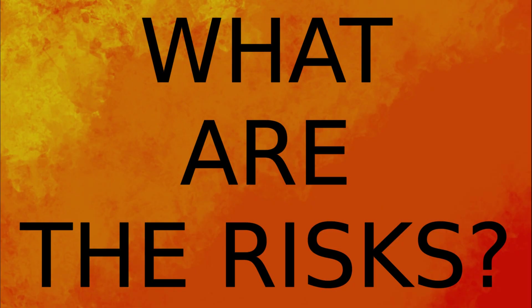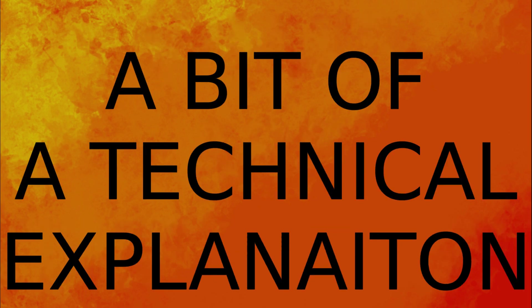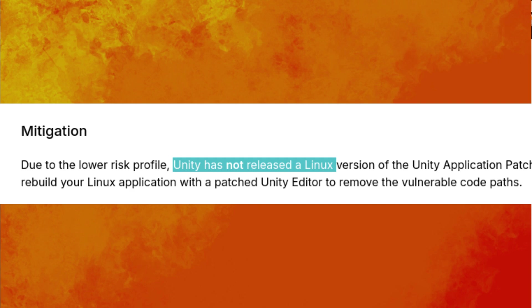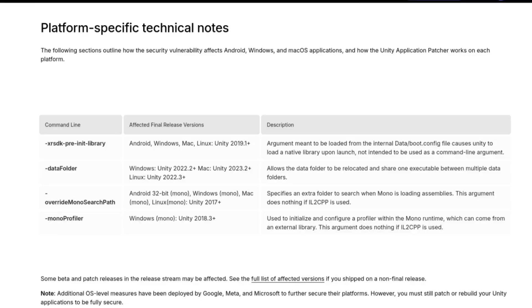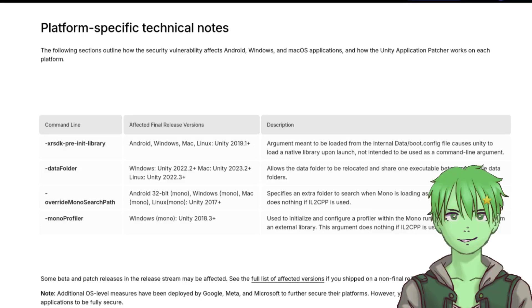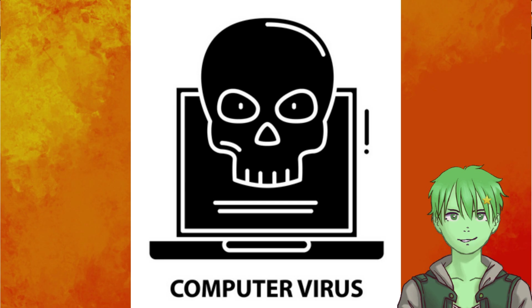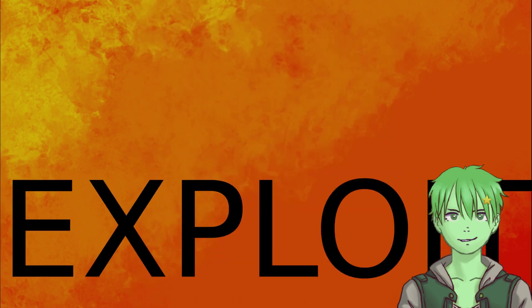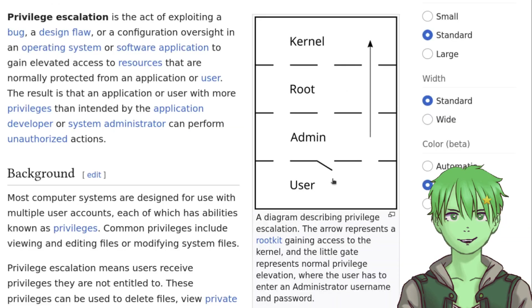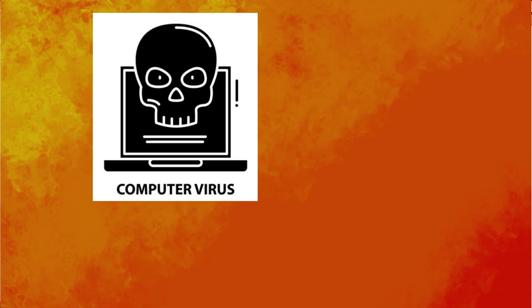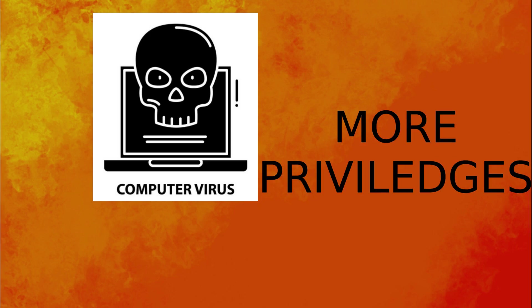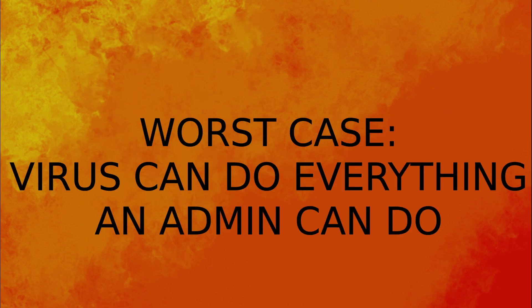So if you're wondering what this exploit is all about, we'll dive into the more technical details. It allows local code execution on devices that run Unity-built applications. If there is malware on your system, it allows it to exploit the vulnerability in your Unity code to do a privilege escalation — going from a user to maybe admin, root, or even kernel level. That means if there is a virus on your system, it will be able to get more privileges and in the worst case scenario have full control over your system.